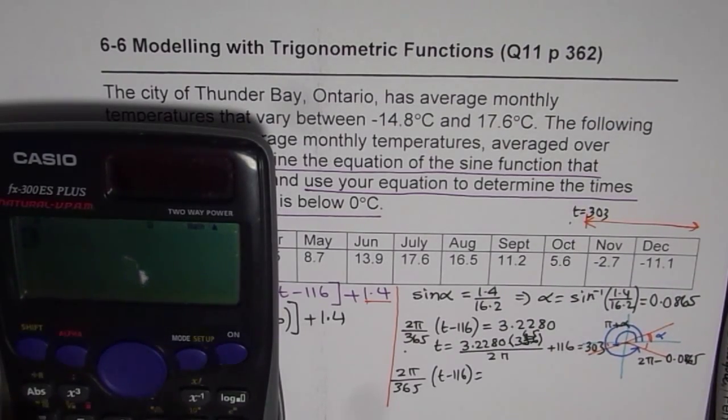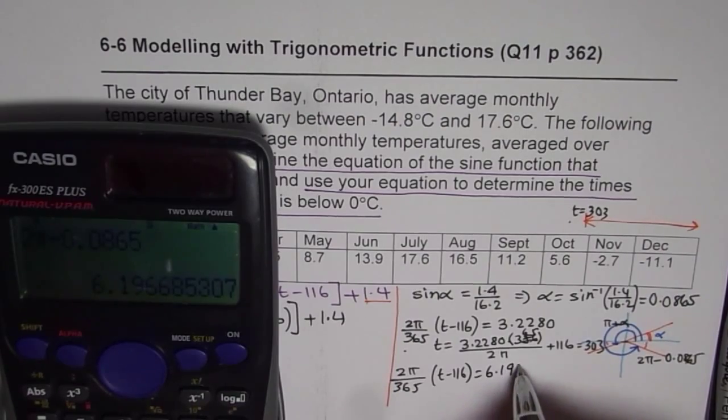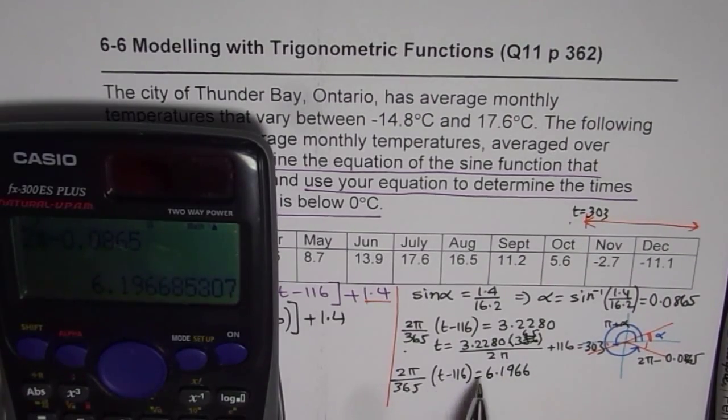So we will say 2 times shift pi, that is 2 pi minus 0.0865 equals to this value 6.1966. To find t, as we did earlier,